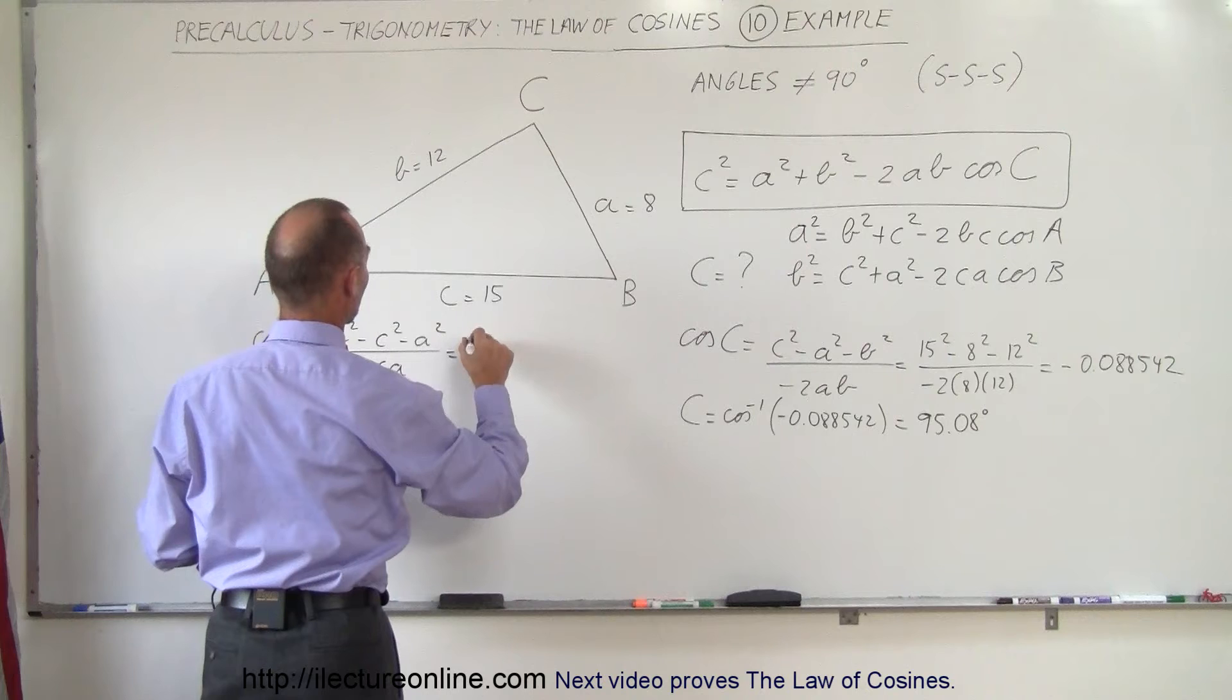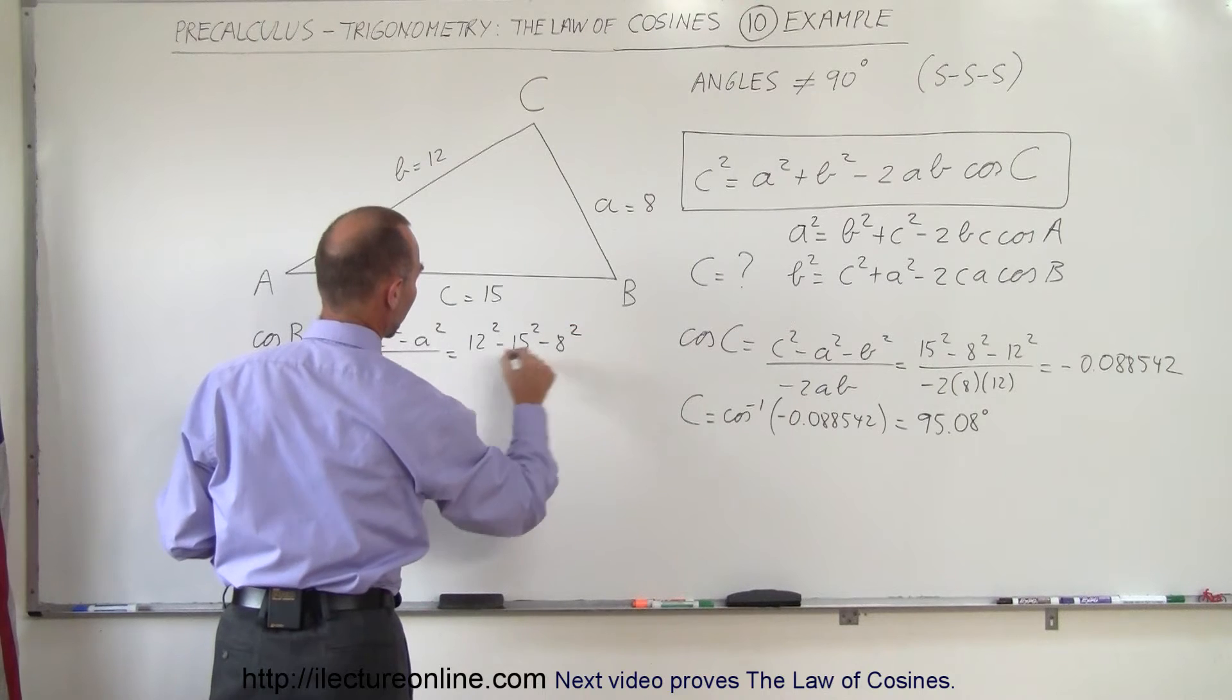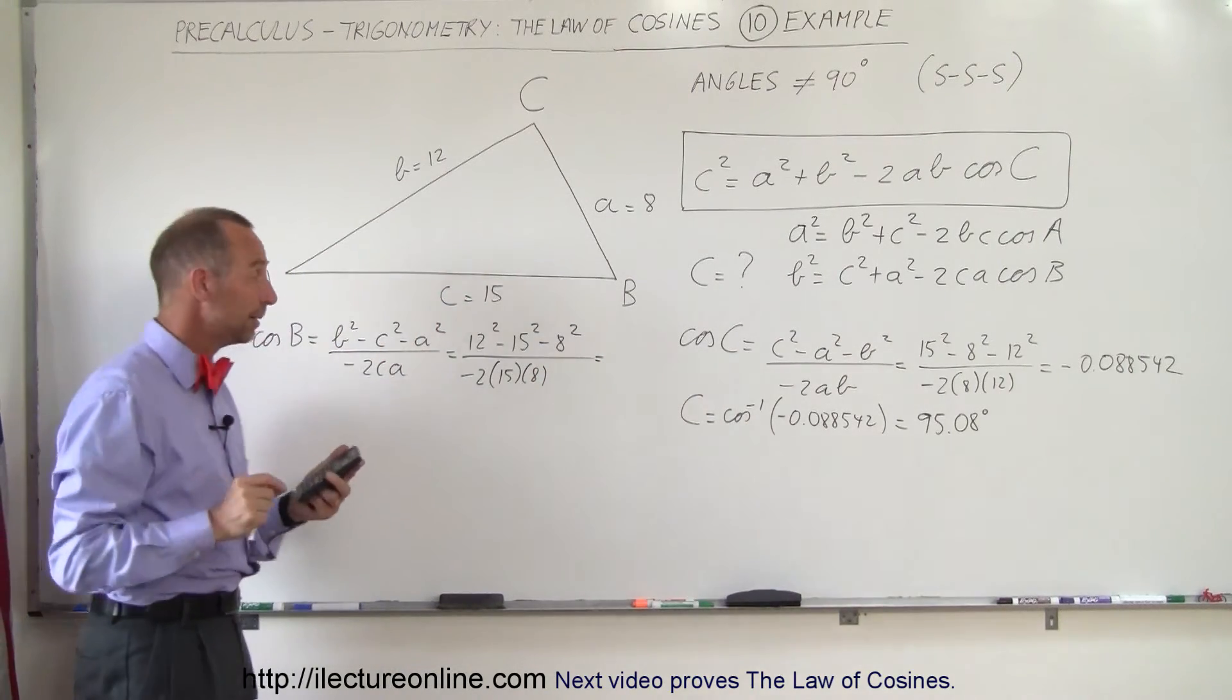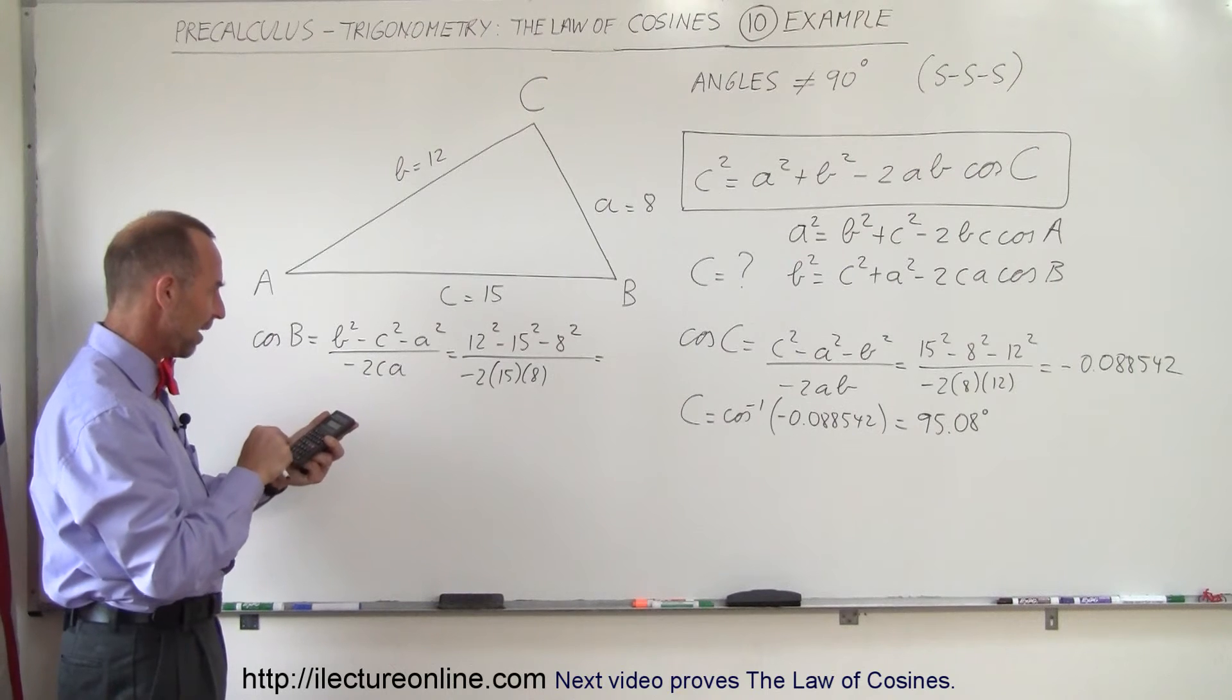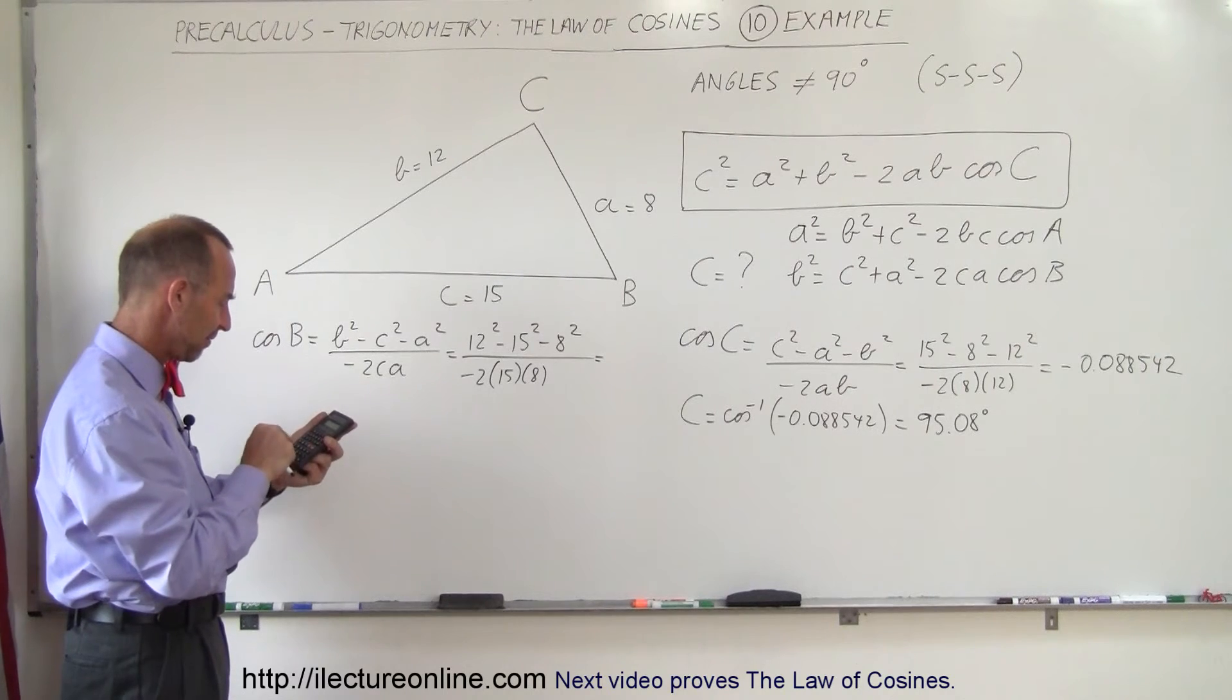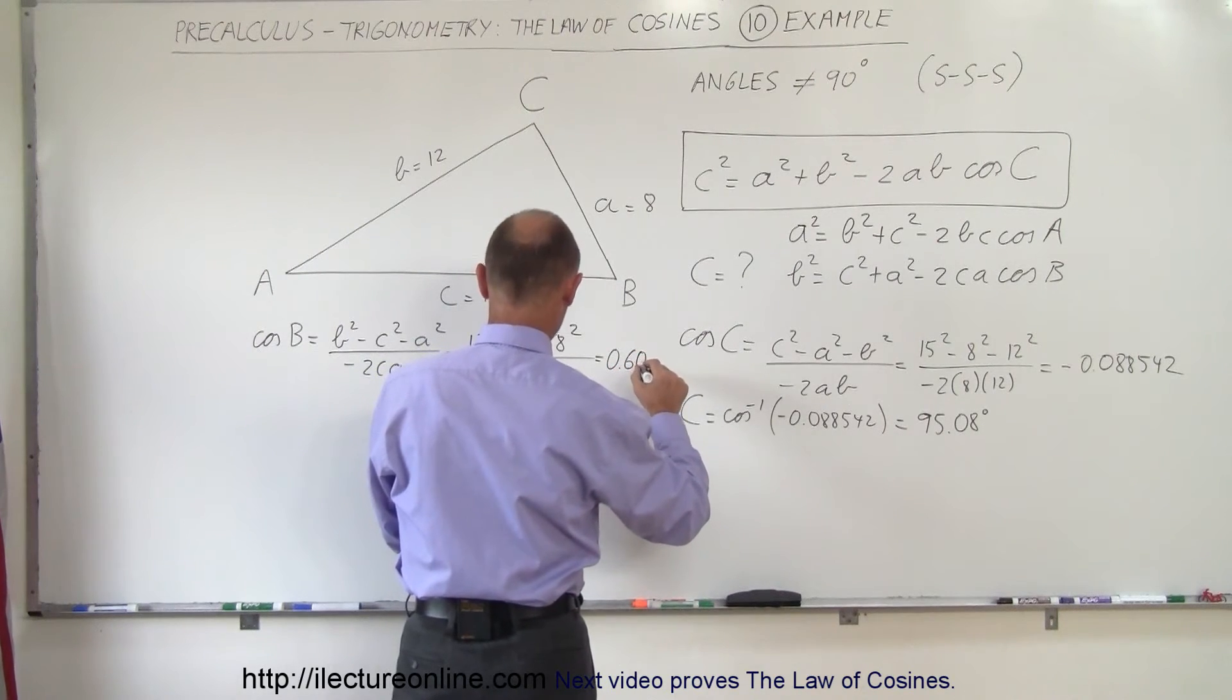Which is equal to 12 squared minus 15 squared minus 8 squared, divided by minus 2 times 15 times 8. Let's see what we get here. 144 minus 225 minus 64 divided by negative 2 divided by 15 divided by 8, and we get 0.60417.